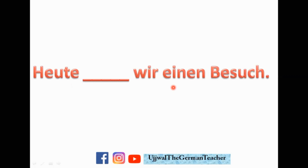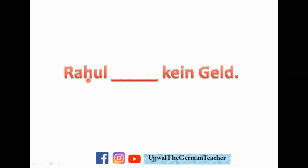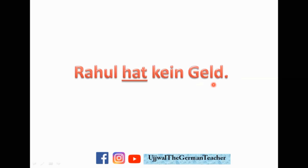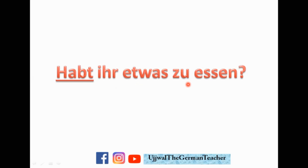Let's see examples. Heute, blank, wir einen Besuch. Today we have a visitor — Heute haben wir einen Besuch. So with wir you use haben. Next: Rahul, blank, kein Geld. Rahul has no money — Rahul hat kein Geld. Er hat — he case. Next is a yes/no question — Ja/Nein Frage. The verb comes in first position: Habt ihr etwas zu essen? Do you have something to eat? Etwas means something, essen means to eat.